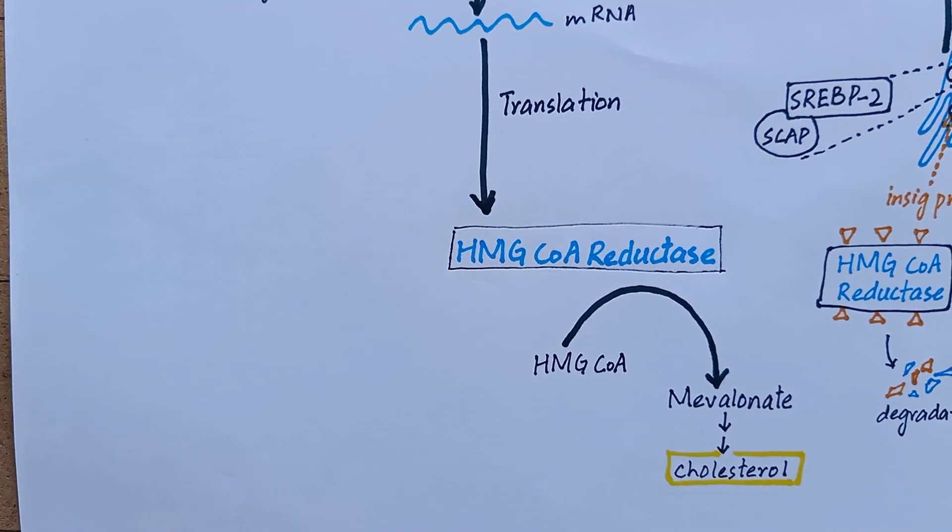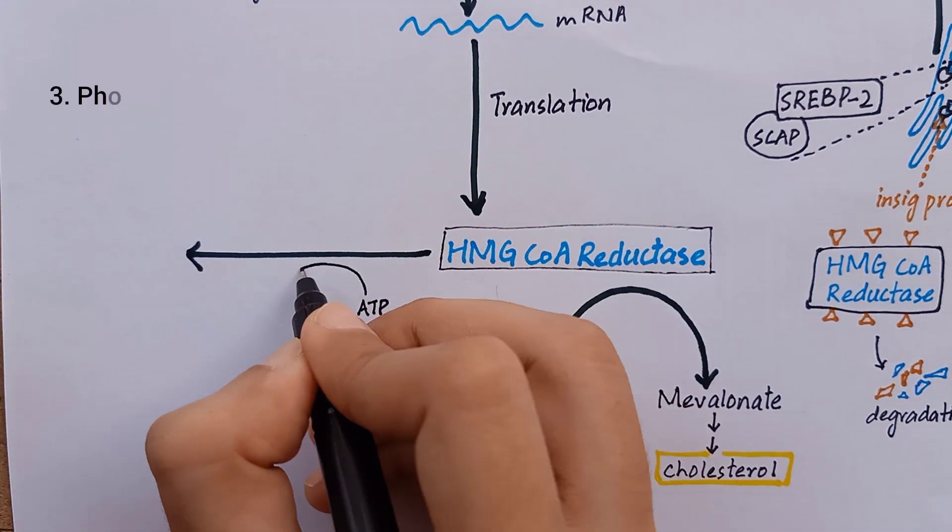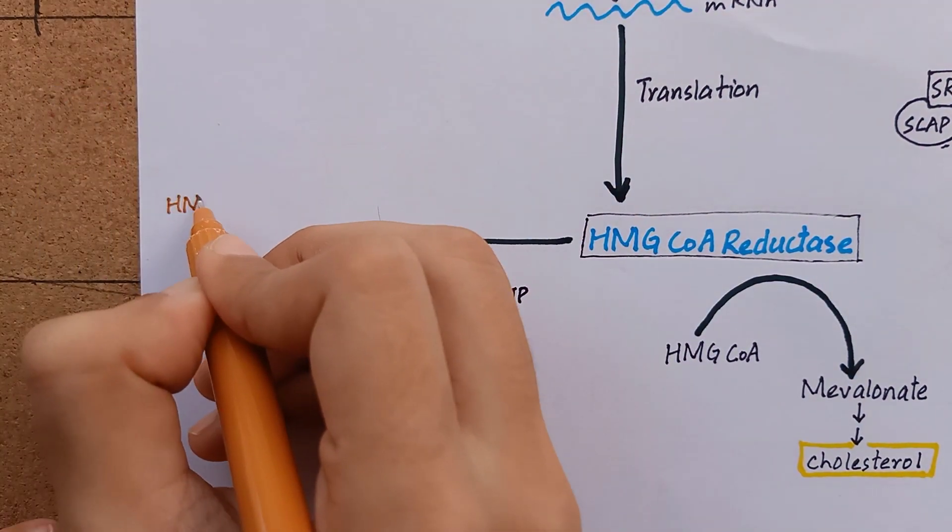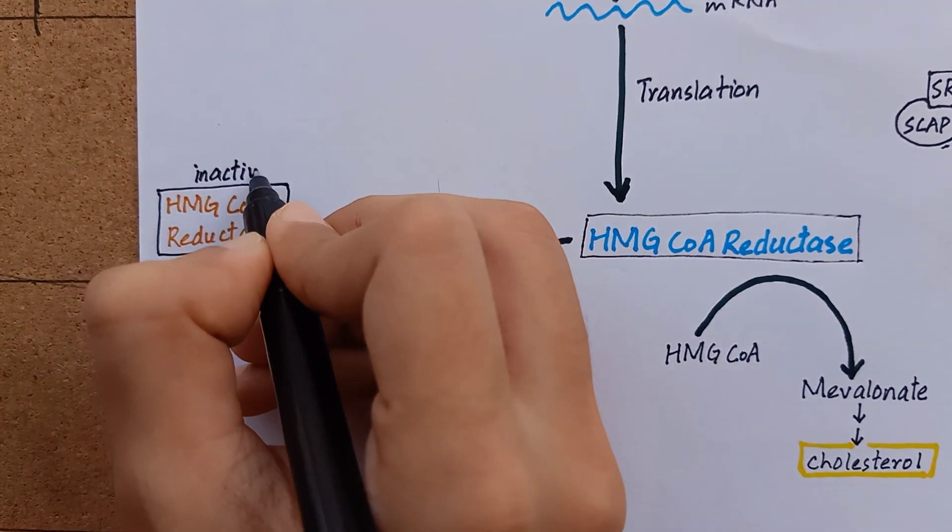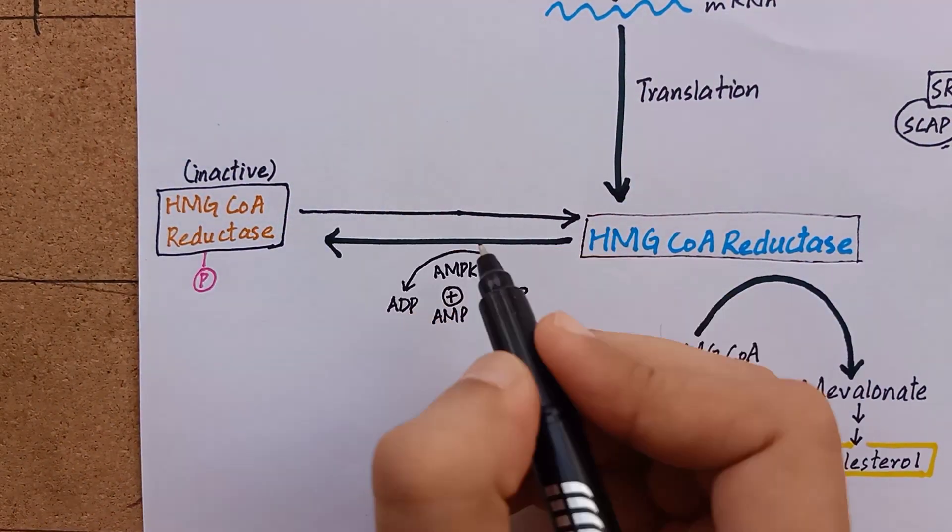Another method of regulation of cholesterol synthesis is the availability of ATP. The enzyme HMG-CoA reductase is inactive when phosphorylated whereas the dephosphorylated form is active.